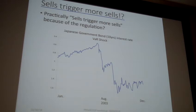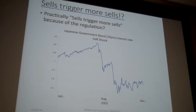Why? Because of the CR regulation. Because of the CR regulation, a small crash shock happened, and then banks' asset prices go down. Then their CR ratio goes down, so banks have to sell their assets. This is one asset case, but in the case of some kind of broader asset market, it is a very, very big problem.